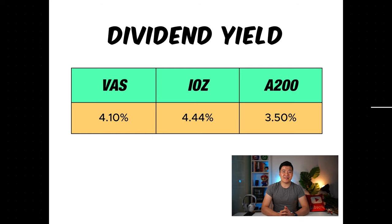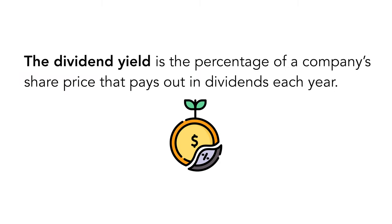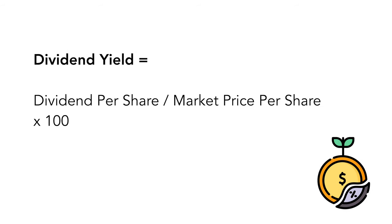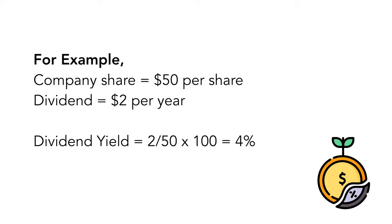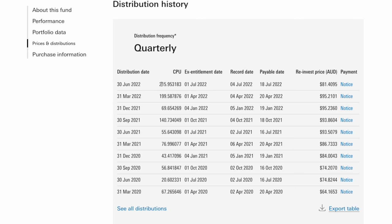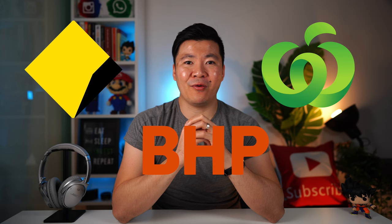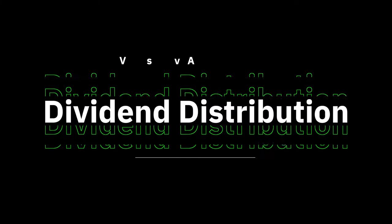Let's now look at the dividend yield for each fund. Each fund provides similar dividend yields, with IOZ paying a bit more than VAS and A200. VAS is at 4.1%, IOZ at 4.44%, and A200 at 3.5%. The dividend yield is the percentage of a company's share price that pays out in dividends each year, calculated by dividing the dividend per share by the current market price per share and multiplying by 100. For example, if a company has a $50 share price and pays a dividend of $2 per year, the dividend yield is 4%. You can find the dividend per share on the ETF's website under distributions. The Australian stock market is famous for paying generous dividends, and with each ETF having a large weighting in big Aussie companies like the big four banks, mining companies, and supermarkets, some of those profits are passed on to shareholders as cash dividends. Note that dividend yield can be misleading if the share price has dropped significantly, so always do your due diligence.